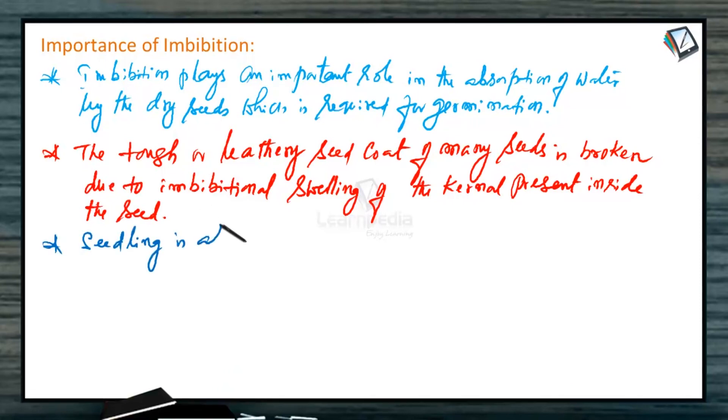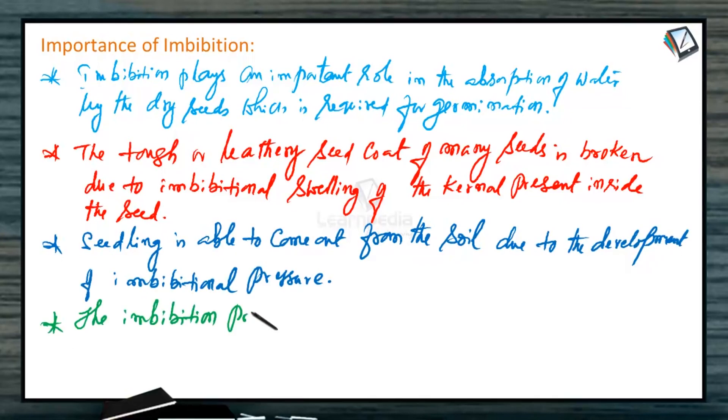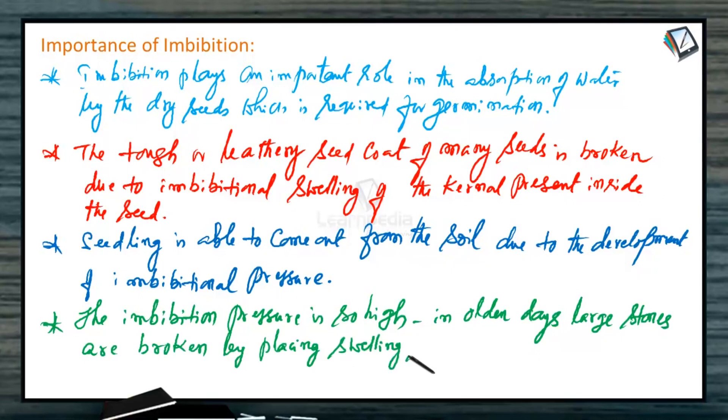Seedling is able to come out from the soil due to the development of imbibational pressure. The imbibational pressure is so high - in olden days, large stones were broken by placing swelling seeds in the crevices of the rocks. These are some of the importances of imbibition phenomenon.